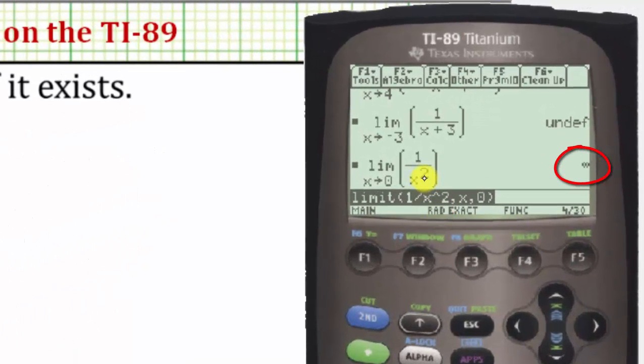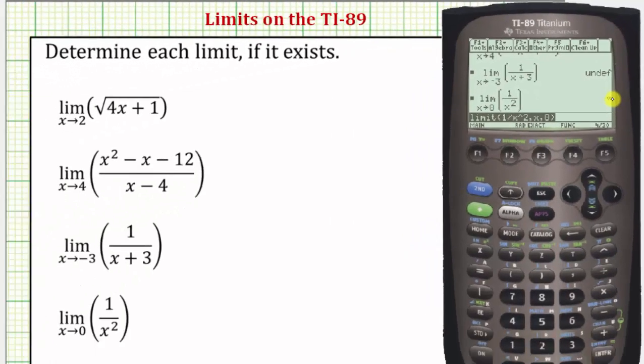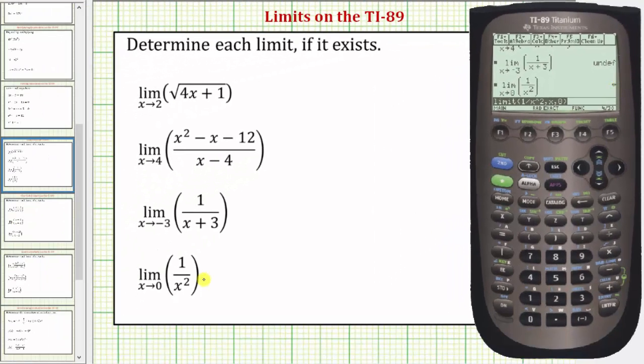Notice the calculator is telling us the limit is equal to positive infinity. Remember, infinity does not exist, so this also indicates the limit does not exist. So what we typically do, though, is say this is equal to infinity.